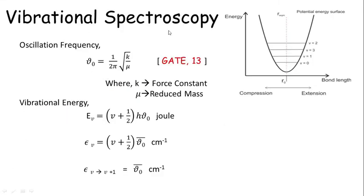Next is vibrational spectroscopy. The oscillation frequency is ν₀ = (1/2π)√(K/μ), where K is the force constant and μ is the reduced mass. This was asked in GATE 2013. The vibrational energy is Eᵥ = (V + ½)hν₀ Joules, and in terms of wave number, εᵥ = (V + ½)ν̃₀.